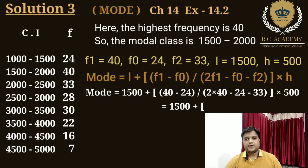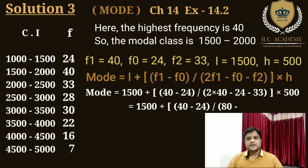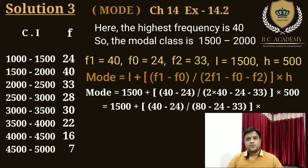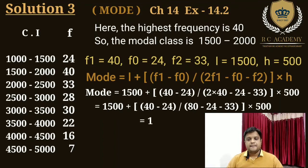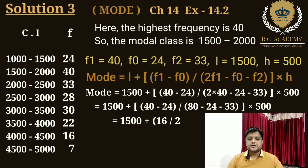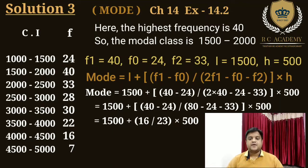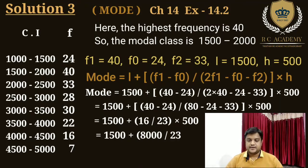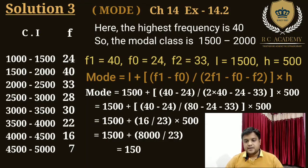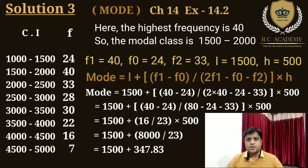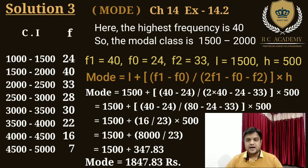Next step: 1500 + (40 - 24) = 16; denominator: 80 - 24 - 33 = 23. Toh step hogi: 16/23 × 500. Next step: 1500 + (16 × 500)/23 = 1500 + 8000/23 = 1500 + 347.83. Toh mode is 1847.83 rupees. This is the answer.